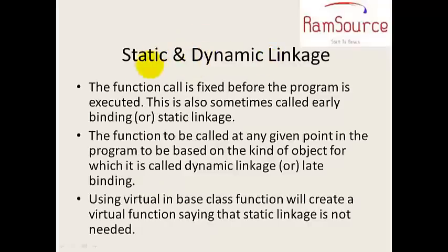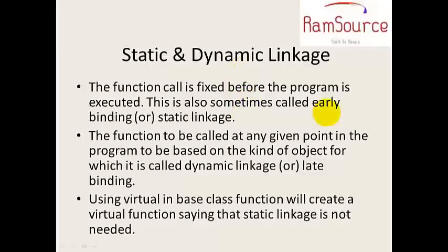Static and dynamic linkage are technical terms used in polymorphism with virtual functions. Static linkage means a function call is fixed before the program is executed — the compiler decides at compile time what will be executed. That is why it is called early binding, and static polymorphism is also known as compile-time polymorphism.